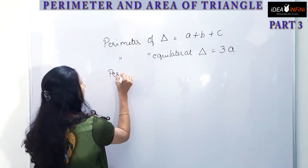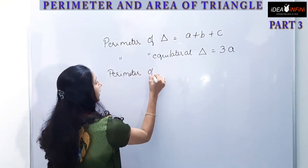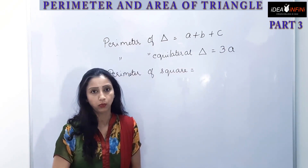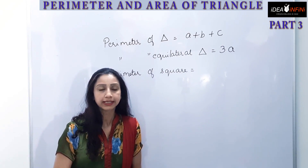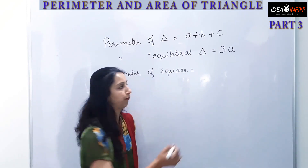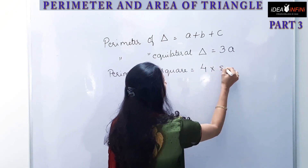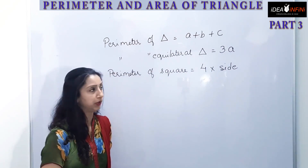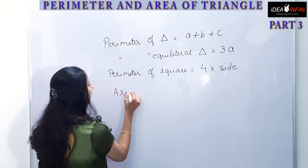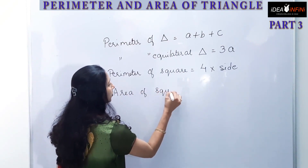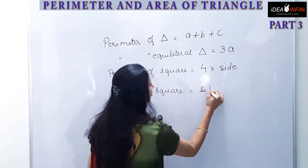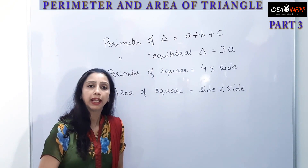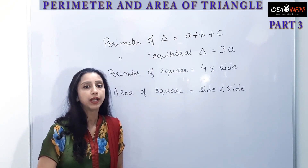The perimeter of a square is also the sum of all sides. Since all sides are equal in a square, we multiply by four — four into side. For example, if the side is 10 centimeters, the perimeter is 4 into 10, that is 40 centimeters. Similarly, the area of a square is side into side. If the side is 20 centimeters, the area will be 20 into 20, that is 400 centimeters square.